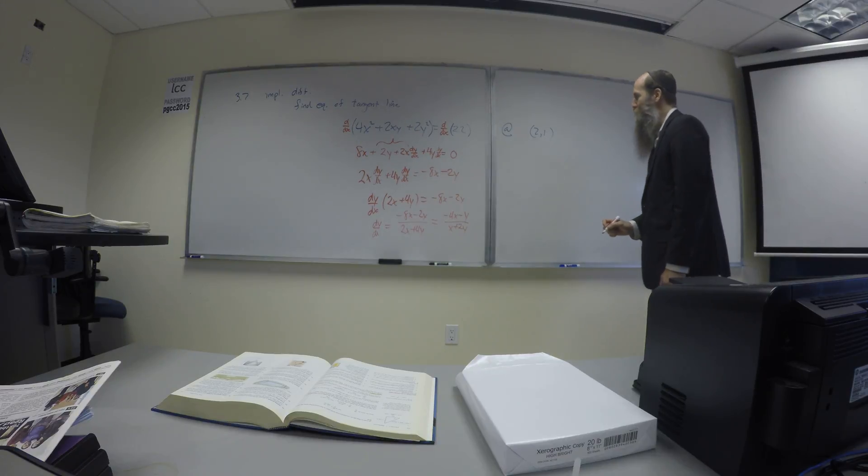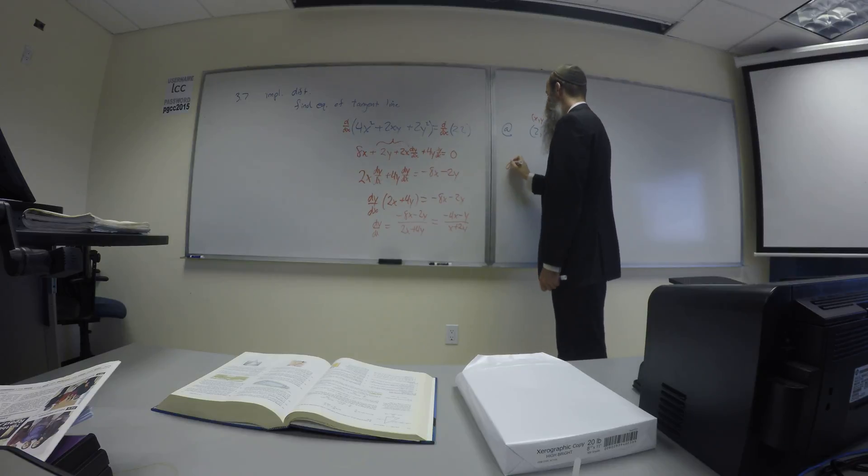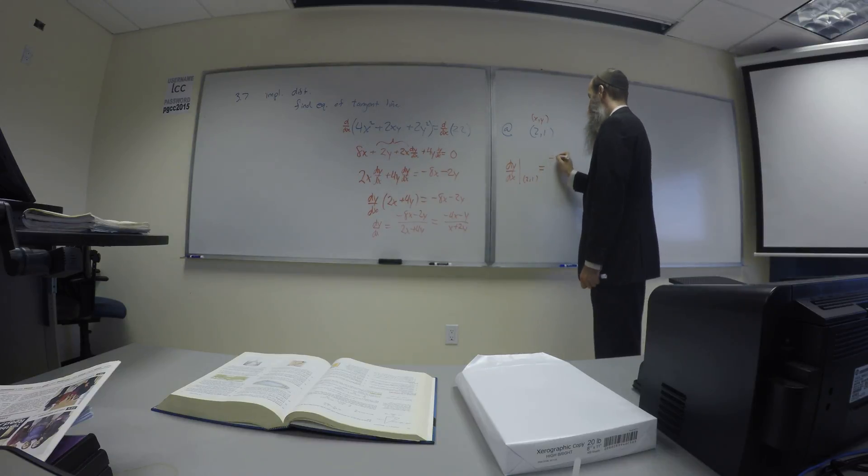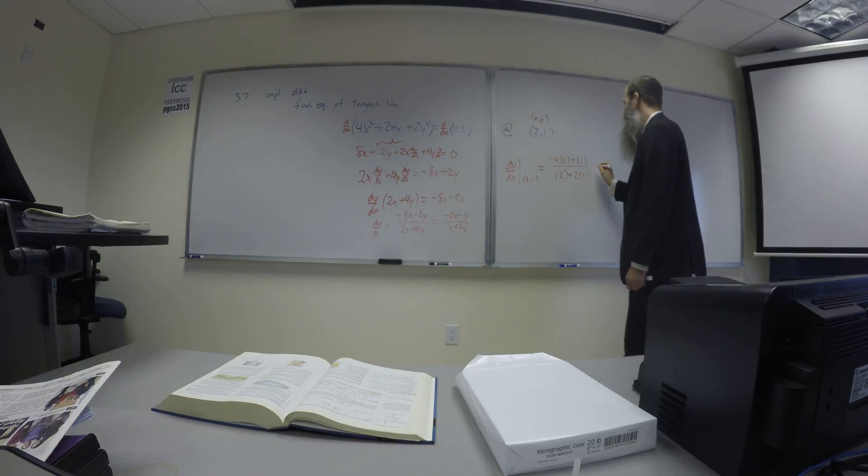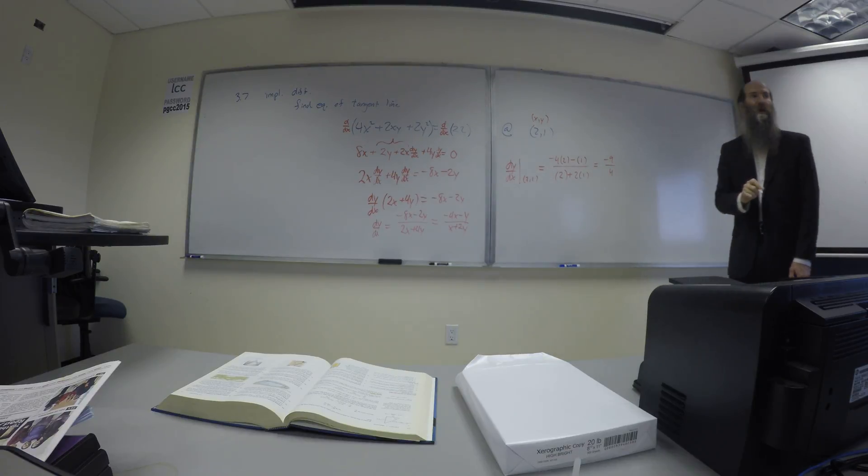So now we need to find this result at 2,1. They gave us the point, they gave us x and y. So we'll just plug this in here. So dy dx at 2,1 is going to be negative 4 times 2 minus 1 over 2 plus 2 times 1. So the top reads negative 9, and the bottom reads, I was hoping it was a 3, it looks like it was a 4. So we have negative 9 quarters for the slope at that point.